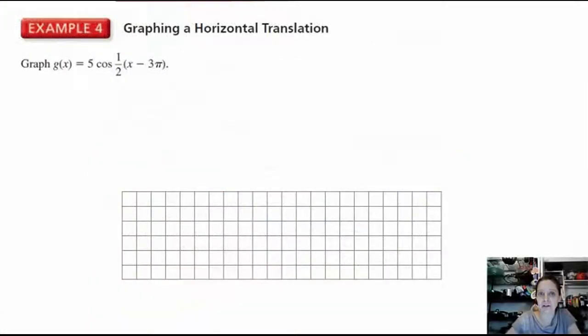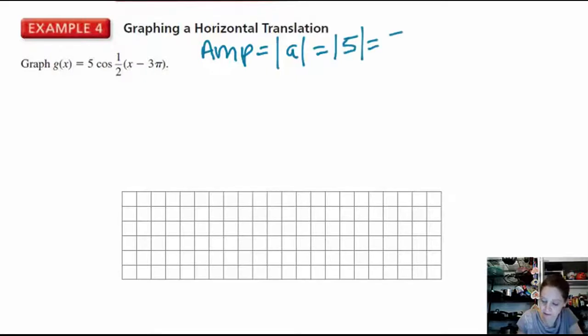Example 4, graphing a horizontal translation. Graph g(x) = 5 cos(1/2 x - 3π). Step 1 is to identify the amplitude, period, vertical shift, horizontal shift. Amplitude is the absolute value of a. a is 5, so the absolute value of 5 is 5.